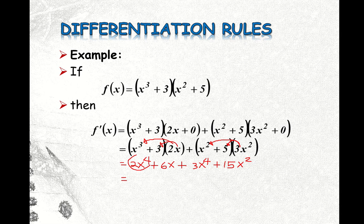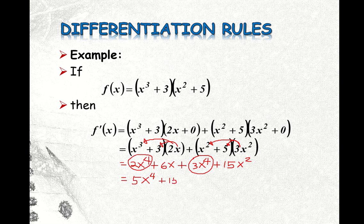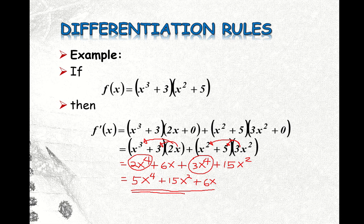So our final answer: we have 2x to the fourth. Combining similar terms — both positive — gives us 5x to the fourth power. Rearranging, we have plus 15x squared, then plus 6x. So this is the correct answer. Apologies for that mistake — I think I was already very sleepy after one straight hour of lecture. I hope you forgive me.